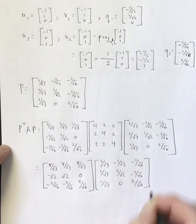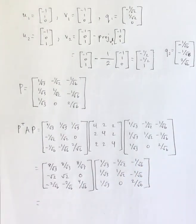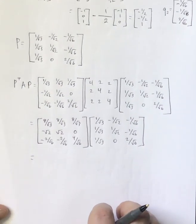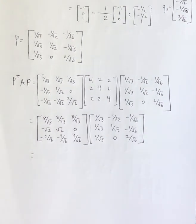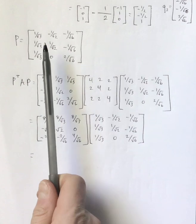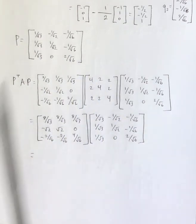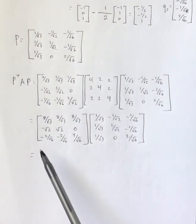And let's see what we end up getting when we multiply those together. Now, we should already know, or we should already have an expectation of what we're going to come up with. Remember that the first column of P corresponded to lambda equals 8, and the second two both corresponded to lambda equals 2. So I expect to get 8, 2, 2 along the main diagonal and 0s elsewhere.